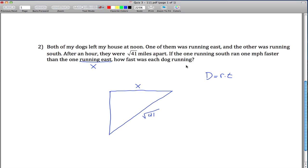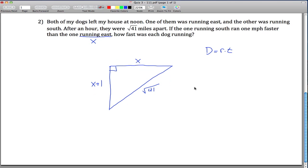And then this one, the one running south is running 1 mile per hour faster than this guy. So that means this speed is x plus 1. And we multiply this by 1 also for the 1 hour. You can just leave it as x plus 1. And now we have the picture that we need. We can use Pythagorean theorem to figure out what x has to be.